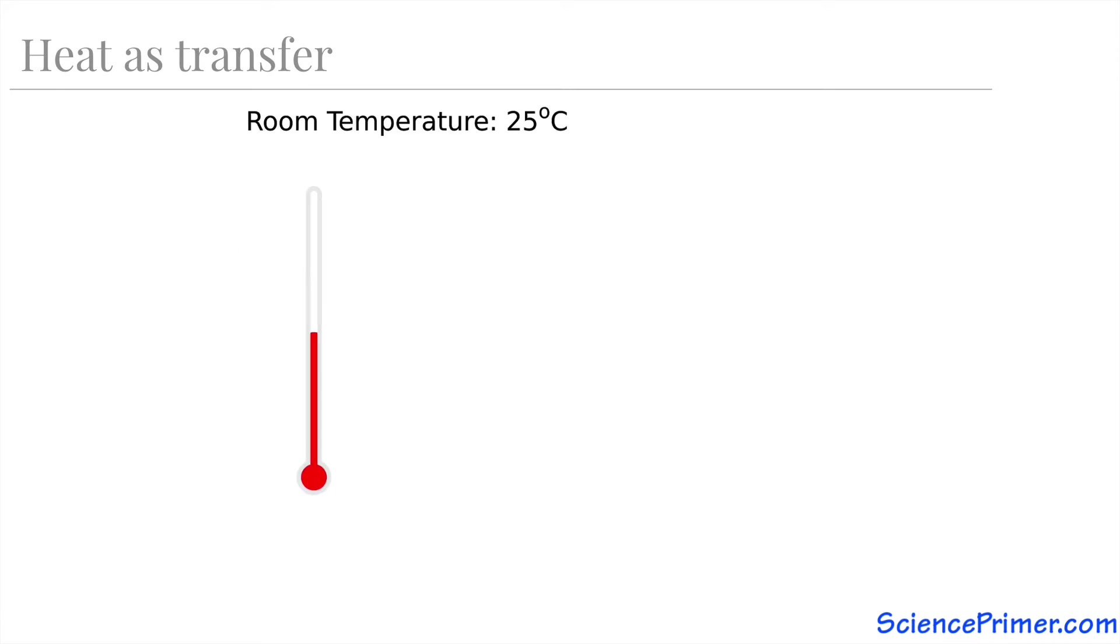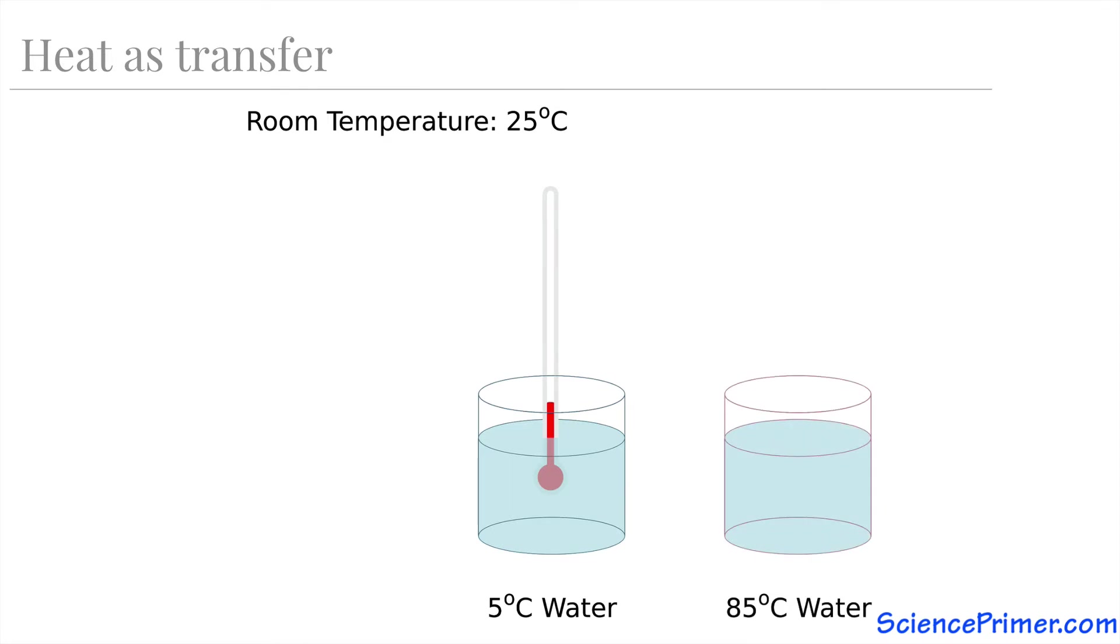This is how thermometers work. If we take a thermometer at room temperature and place it in cold water, heat, or thermal energy, will transfer from the thermometer to the water, lowering the internal kinetic energy of the liquid in the thermometer, causing that liquid to shrink, reducing its volume. If that same thermometer is then placed into warmer water, heat transfers from the water to the thermometer, causing the liquid in the thermometer to expand. The liquid in the thermometer could not be used to measure temperature if heat did not flow.